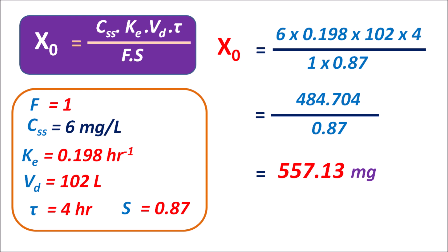We can observe that when given by IV bolus administration, the maintenance dose is somewhat less because of 100% bioavailability as well as the reduced dosing interval. That covers the calculation of maintenance dose for both extravascular and IV bolus administration. In our next video we will cover other important calculations in pharmacokinetics.